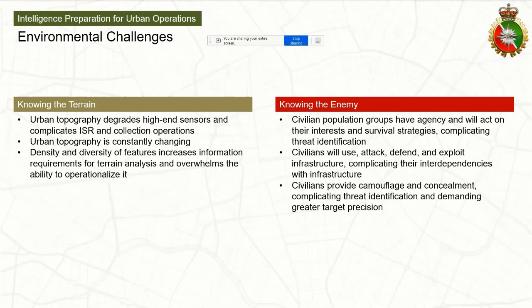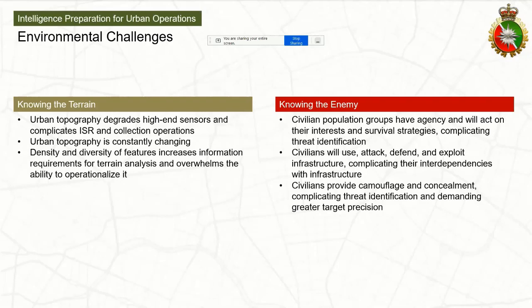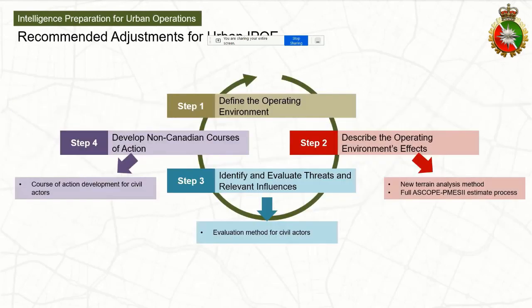Knowing the enemy: civilian population groups have agency and will act on their interests and survival strategies, complicating threat identification. They will use, attack, defend, and exploit infrastructure depending on their survival strategies. Civilians will also provide camouflage and concealment for adversaries in the environment, further complicating threat identification. Because of the way we conduct warfare — very much in line with the Geneva Conventions and rules of engagement — it demands much greater target precision.